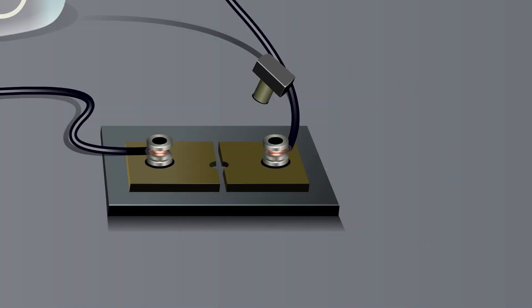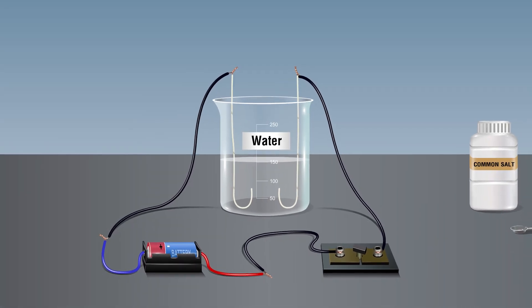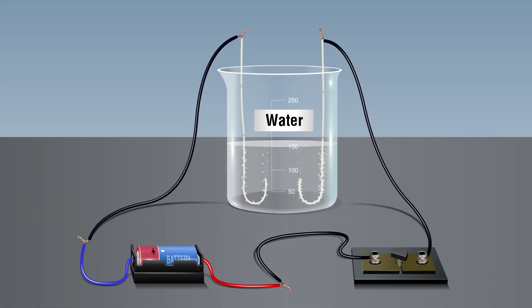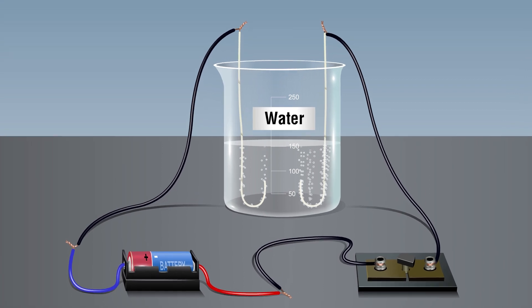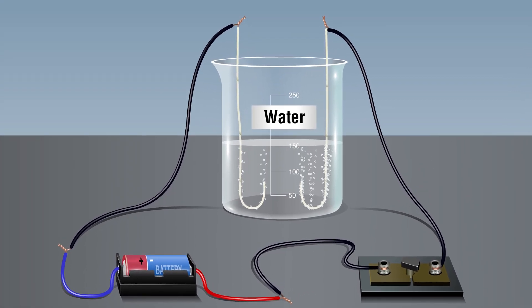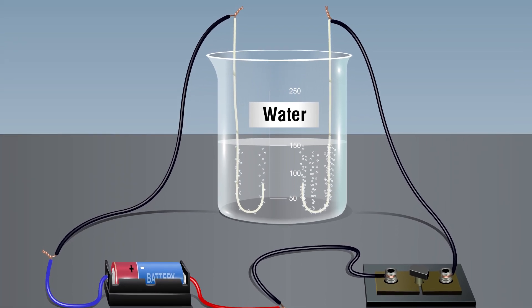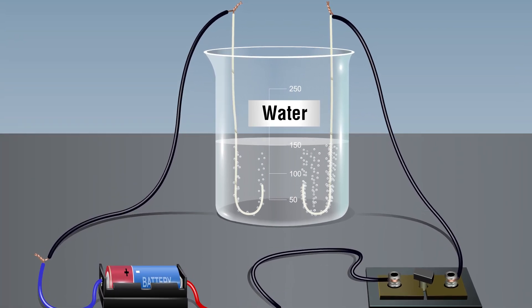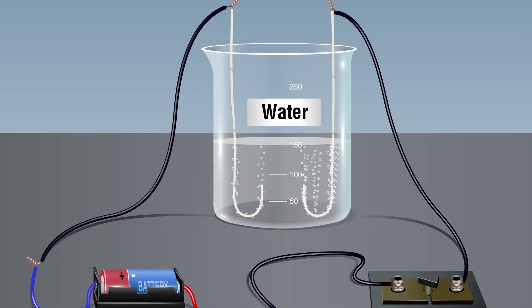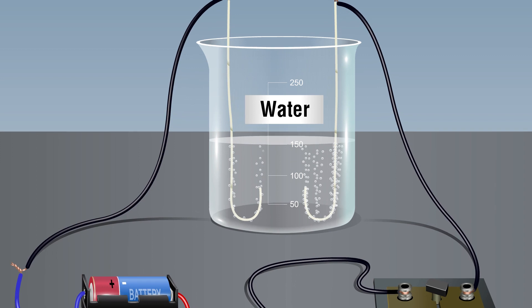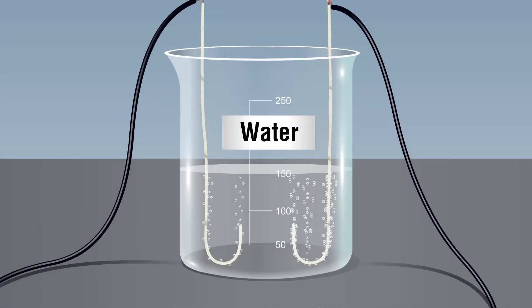Insert the key into the plug. Wait for a few minutes. We observe that small bubbles are formed on both electrodes. Smaller number of bubbles are formed on the electrode connected to the positive terminal of the battery. Larger number of bubbles are formed on the electrode connected to the negative terminal of the battery. Bubbles are formed on the electrodes as long as the key remains inserted in the plug.